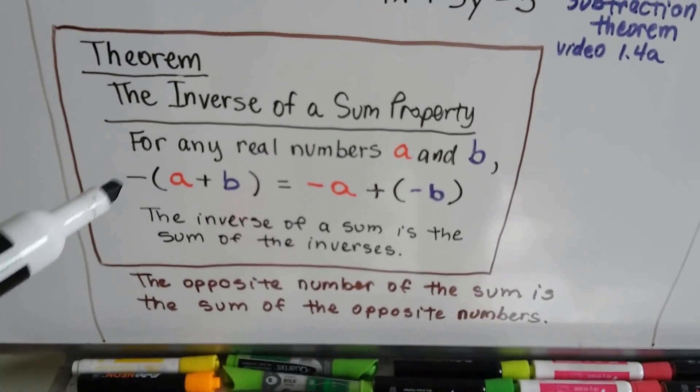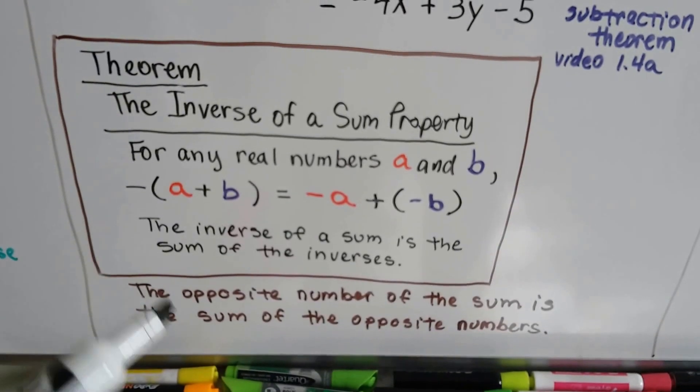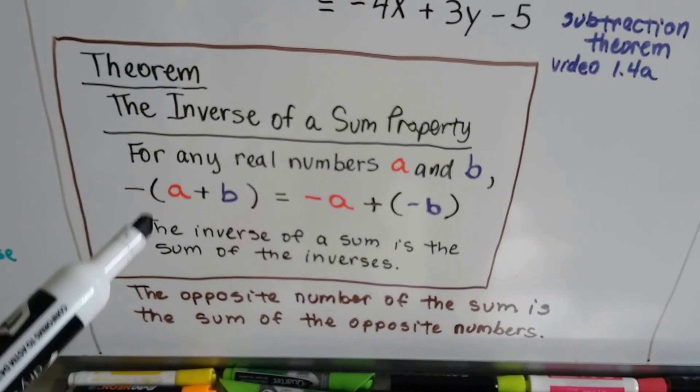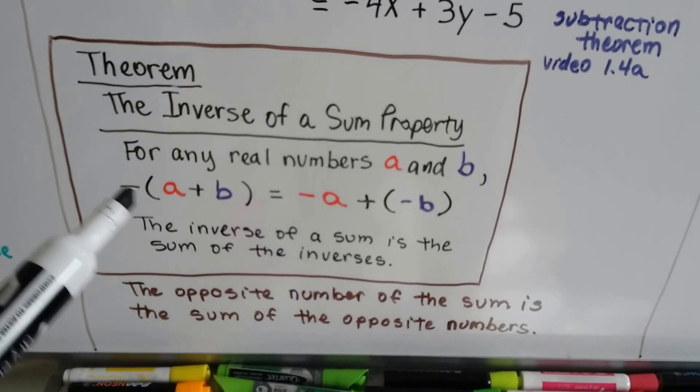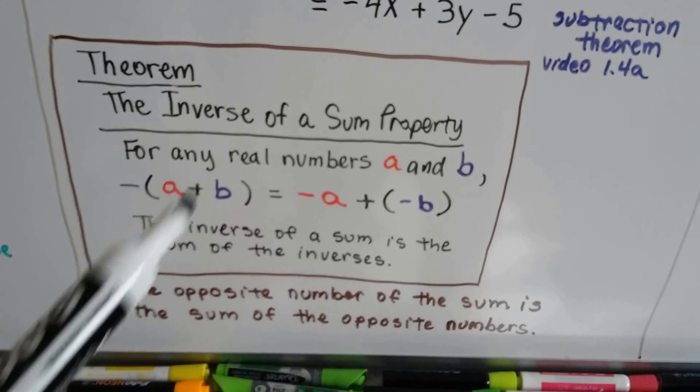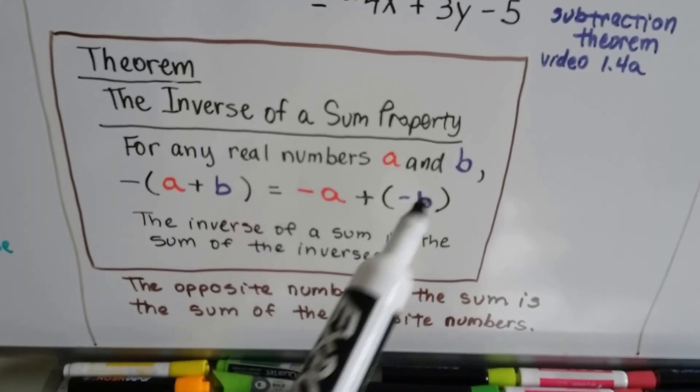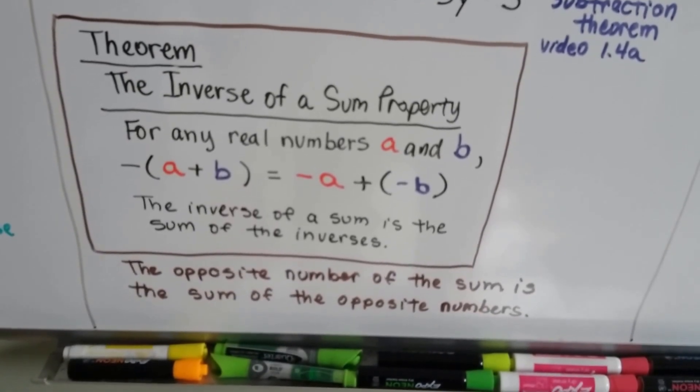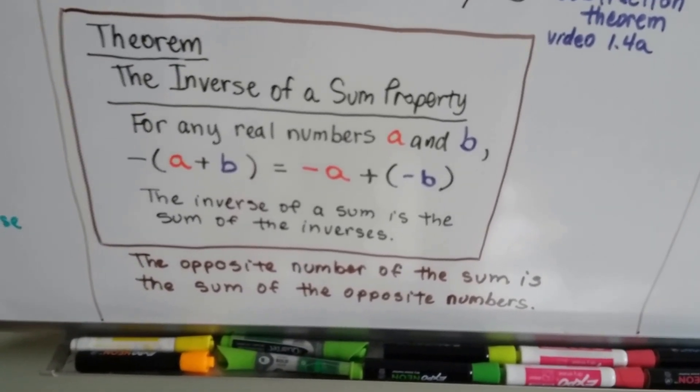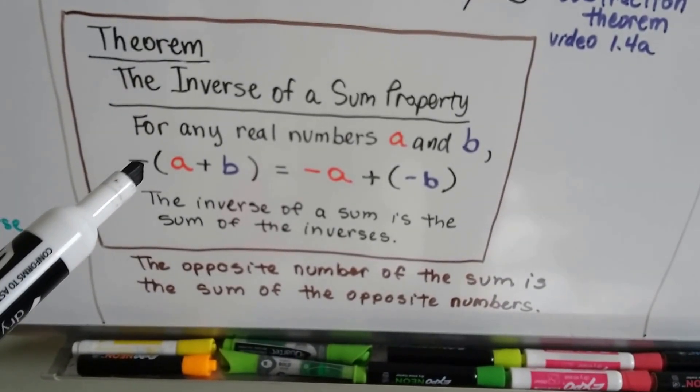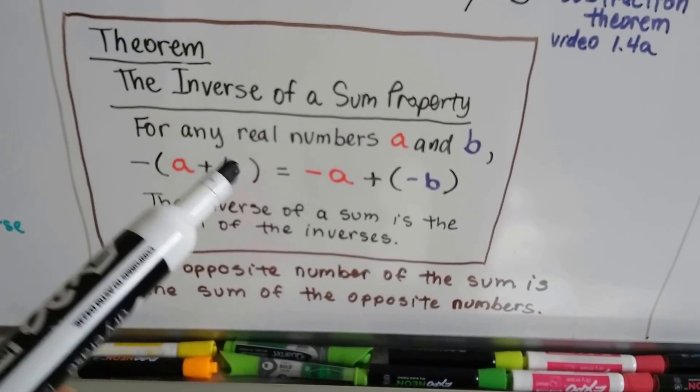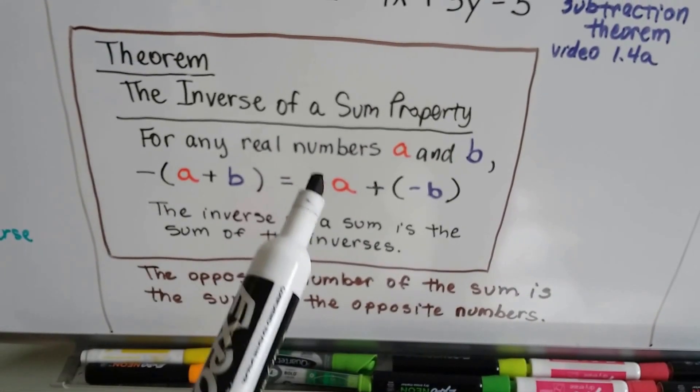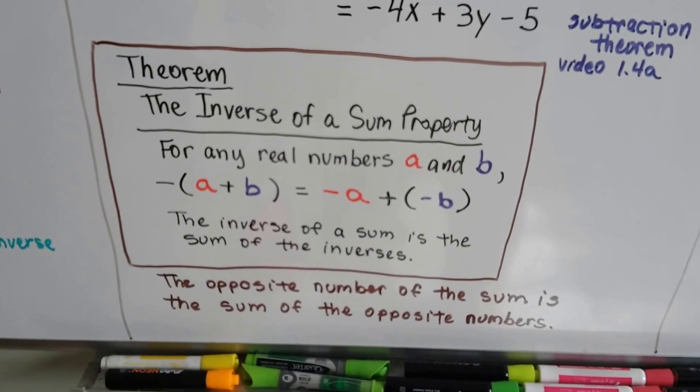For any real numbers a and b, negative times (a plus b) is going to give us negative a plus negative b. It's saying the inverse of a sum, here's the inverse negative 1 of a sum a and b, is the sum of these inverses. What it means is the opposite number of the sum is the sum of the opposite numbers. When you see this, this is the inverse and this is the sum a and b, because they're being added together. And if we have negative a and negative b and add them together, it's the same thing as this.